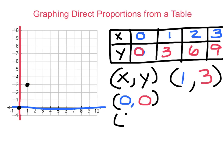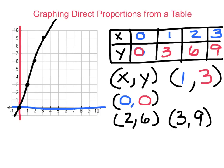Quickly, we can also do our second two points, and without color coding because hopefully you remember how to do this. We also have the point 2, 6, and also 3, 9. We can connect these using a straight edge, which I do not have, so wish me luck. But we can connect these with a straight line, and that is our direct proportion from a table.